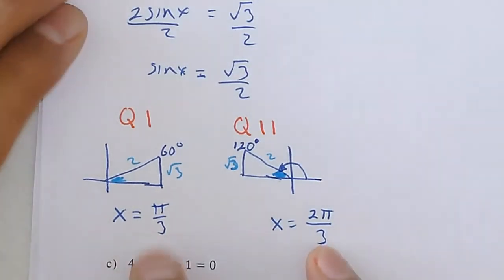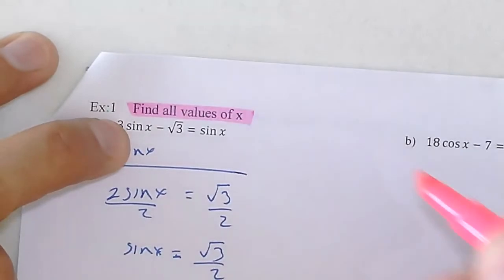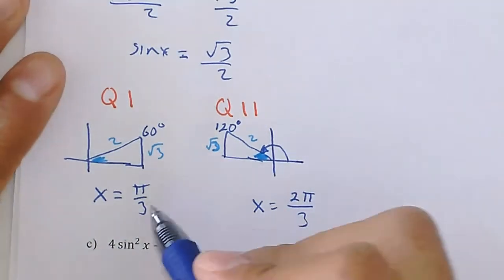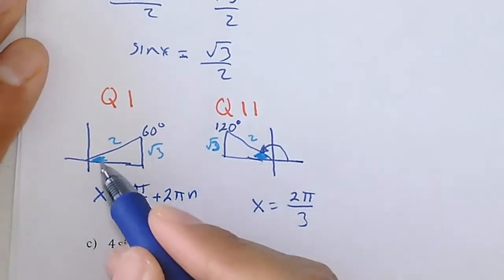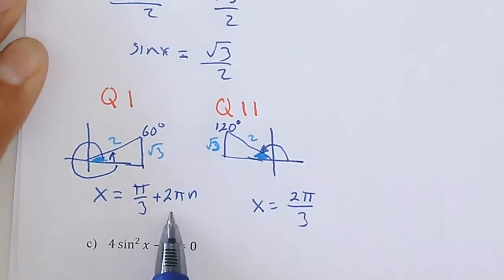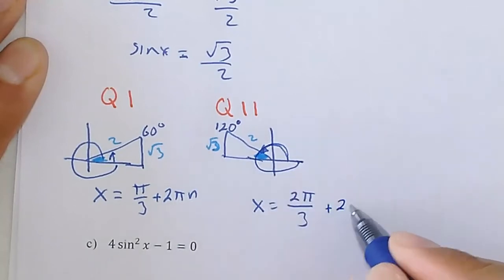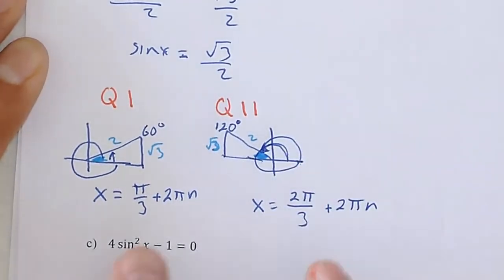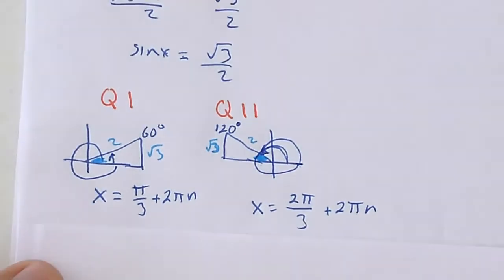Those are only two solutions, but the problem asks to find all values. If I add 2πn to each angle — meaning I go all the way around — it generates the same sine value each time. So the general solutions are: x = π/3 + 2πn and x = 2π/3 + 2πn. These only work when n is an integer, so make sure to include that. That's number one.